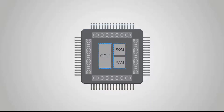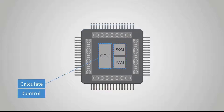The main function of the CPU is calculation and control. The calculation refers to performing various mathematical calculations. The control refers to controlling the input and output according to the program code.